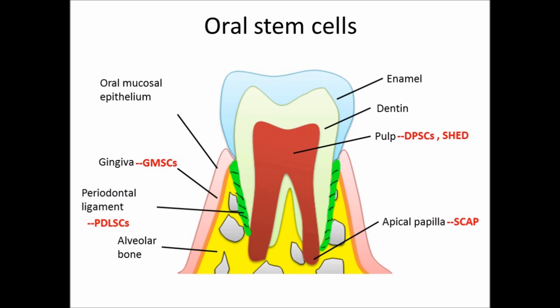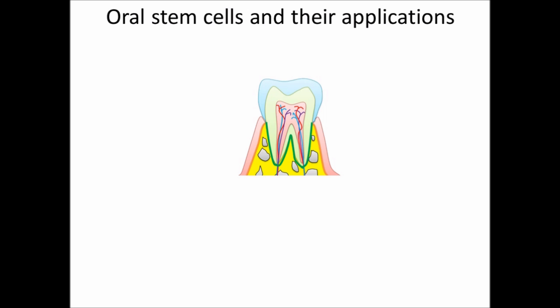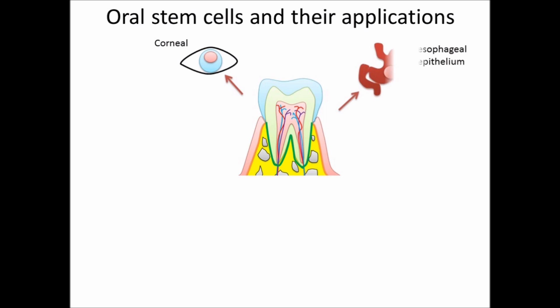From oral mucosal epithelium, epithelial stem cells can also be isolated. During the past two decades, researchers have found that oral stem cells have potential for the regeneration of various tissues and organs. For example, oral epithelial stem cells have been demonstrated to repair corneal and esophageal epithelium in patients and animal models. Oral mesenchymal stem cells have many more applications in both regenerative dentistry and regenerative medicine.